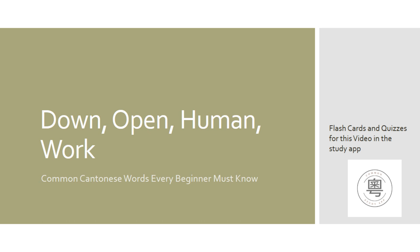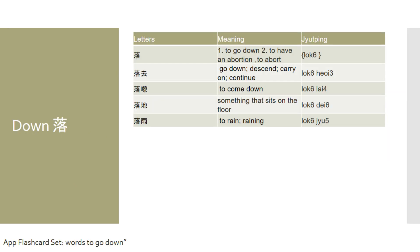If you wish to review the words that I've covered in this video, please check out our Android app, which provides extensive flashcards and quizzes to help you study these words. Let us start with the Chinese character associated with 'to go down,' or 'to have an abortion' or 'to abort' — in Cantonese, it is the Chinese character 落.